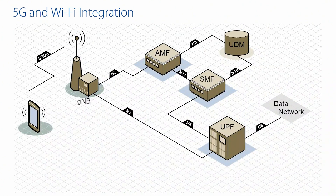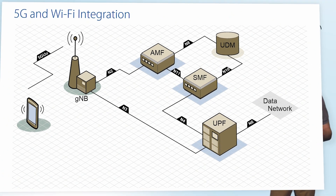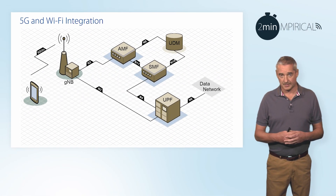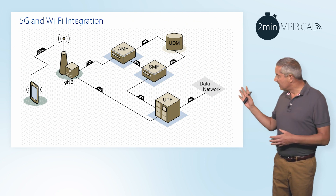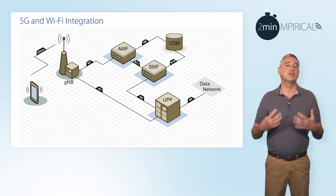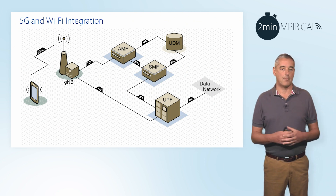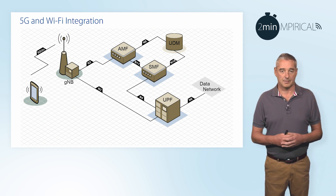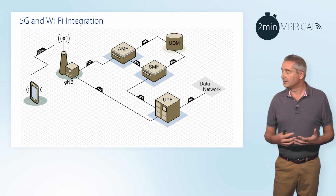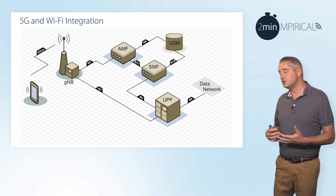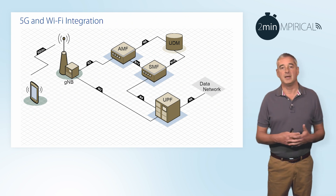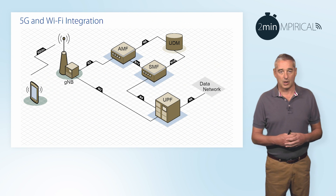Most people would generally consider that Wi-Fi and cellular networks — 5G in this case — are actually complementary technologies. Here on the diagram we can see a simple 5G network architecture made up of the device, the base station, the gNodeB, and the 5G core network.